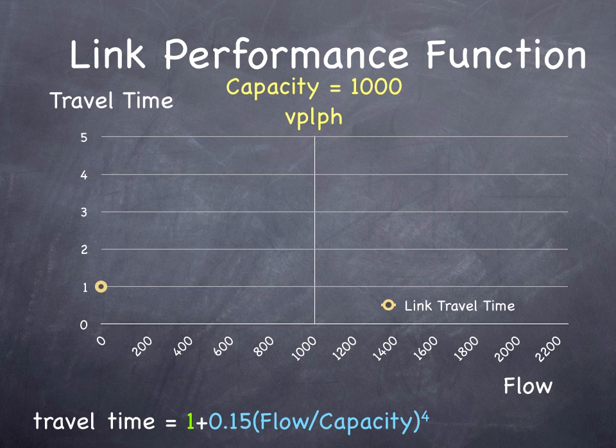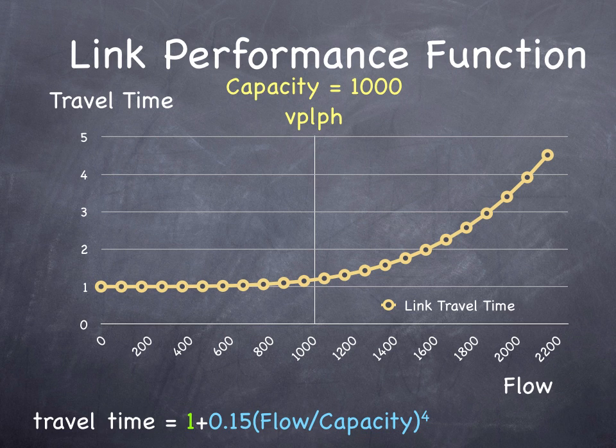So where do we see queues in real life? In route choice, we had link performance functions, which described how the travel time on a particular road segment varied with the number of vehicles using that segment. The relationship typically shows travel time on the y-axis and flow in vehicles per hour on the x-axis. This essentially says that the user of the link receives the average experience of somebody using that link during the hour.